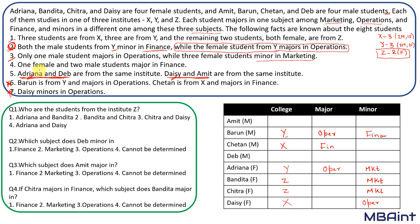Since Adrina is in Y, and Adrina and Deb are a pair from the same institute, Deb is also in Y. Both male students from Y minor in finance, so Deb will minor in finance. Since Daisy and Amit are a pair from the same institute, and Y is taken, Daisy and Amit are from X.